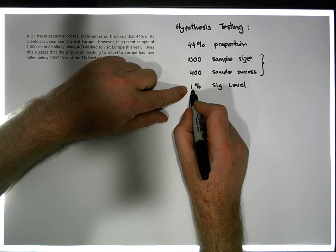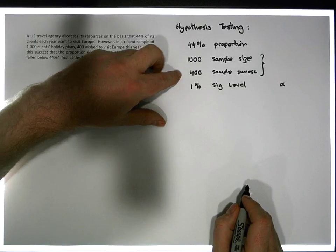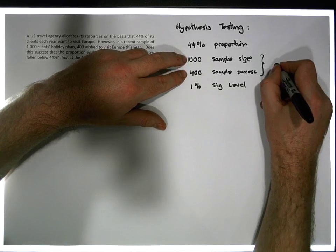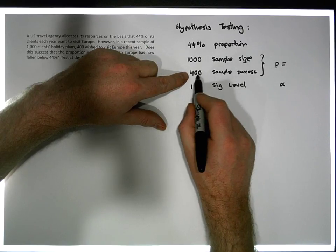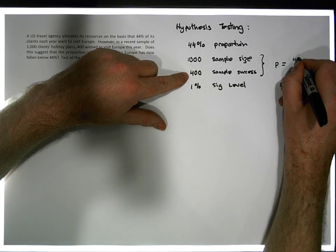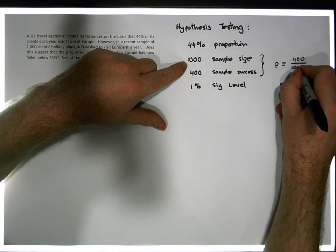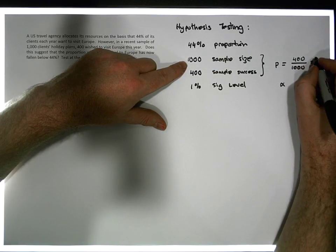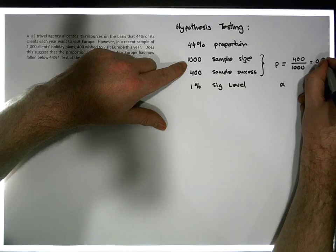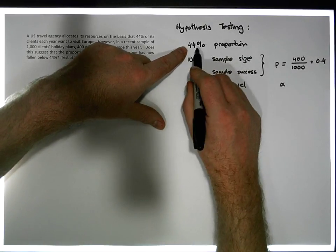So just assigning our symbols, this is our alpha value. The sample proportion P is going to be equal to the number of favourables, the number of successes, 400, over the total number of possibles, which is 1,000. And let's keep in mind that that is 0.4 as a proportion.